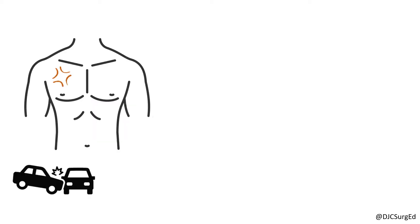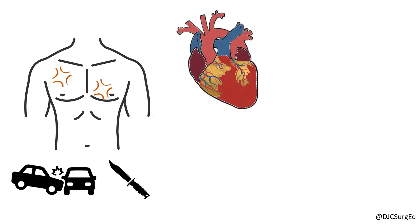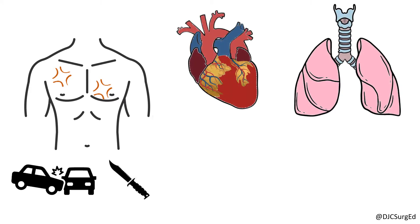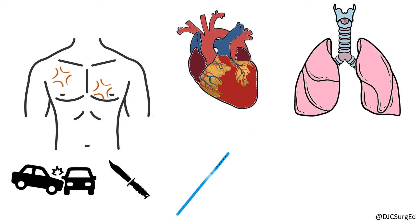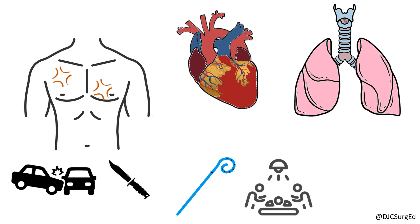Thoracic injuries from blunt and penetrating chest trauma are common and can be life-threatening, as the chest contains vital cardiopulmonary structures. Trauma evaluation begins with the ABCs, but because of their impact on cardiopulmonary function, thoracic injuries often require early intervention, including tube thoracostomy, early OR, or even potential resuscitative thoracotomy.